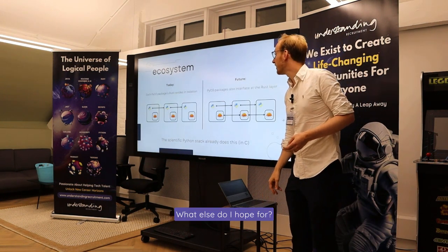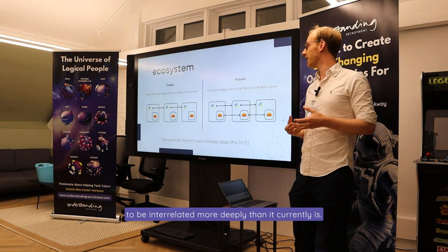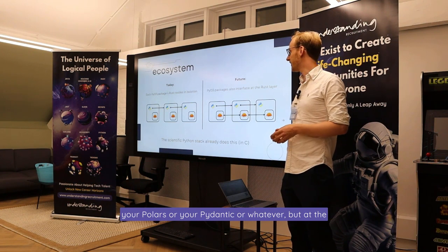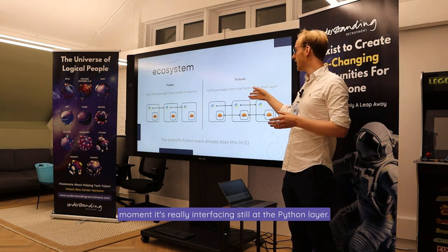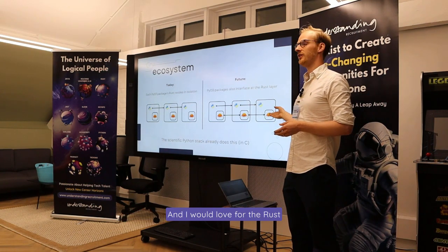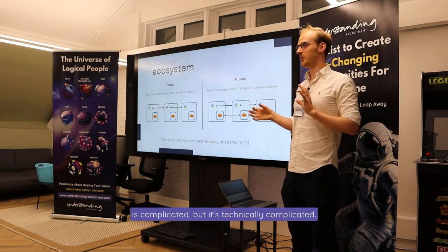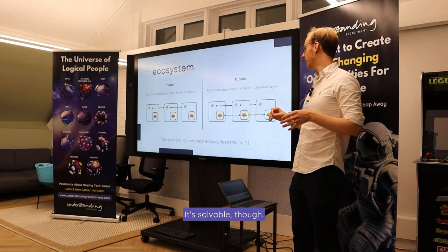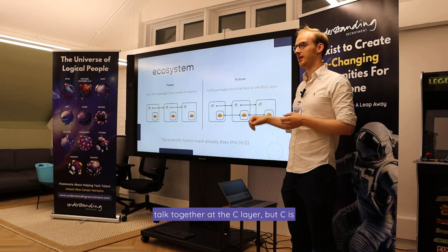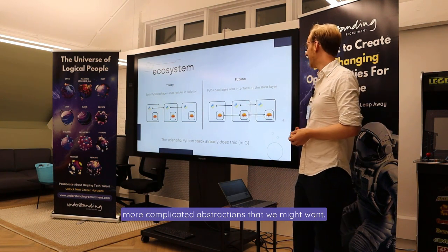I want the ecosystem of Rust and Python packages to be interrelated more deeply than it currently is. We've spoken about how easy it is to build Polars or Pydantic, but at the moment it's really interfacing at the Python layer. I would love for the Rust layer to also be able to interface. It's technically complicated but solvable. The Python scientific stack — NumPy, Pandas, SciPy — all talk together at the C layer, but C is a lot less safe than Rust, so there are more complicated abstractions we might want.